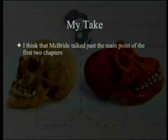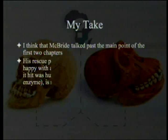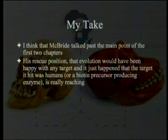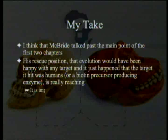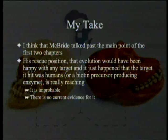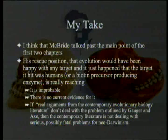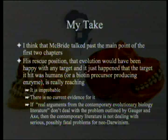I think that McBride talked past the two main points of the first two chapters. His rescue position — that evolution would have been happy with any target and it just happened that the target it hit was humans or even a biotin precursor-producing enzyme — is really reaching. It's highly improbable in the first place and there's no current evidence for it. We don't know of any enzyme that could have gone both ways. If real arguments from the contemporary evolutionary biology literature don't deal with the problem outlined by Gauger and Axe, then the contemporary literature is simply not dealing with serious, possibly fatal problems for Neo-Darwinism. Does evolution work is the real question.